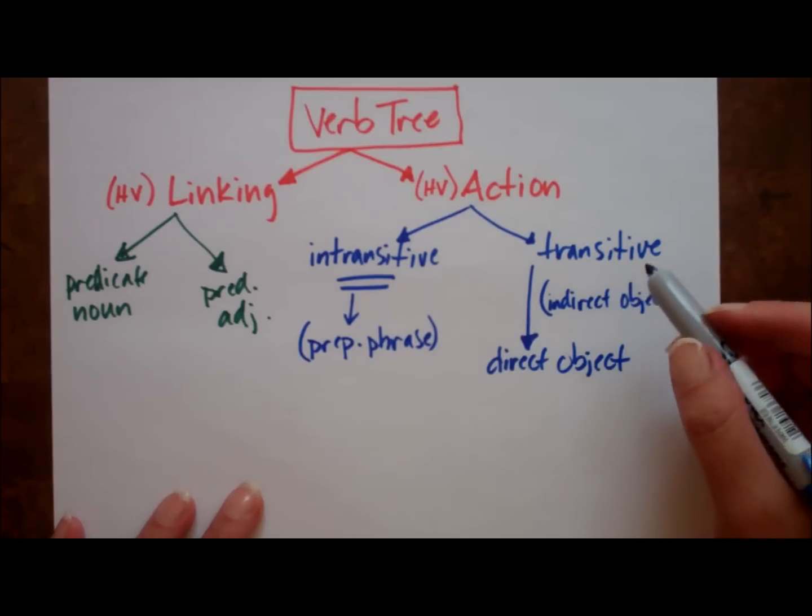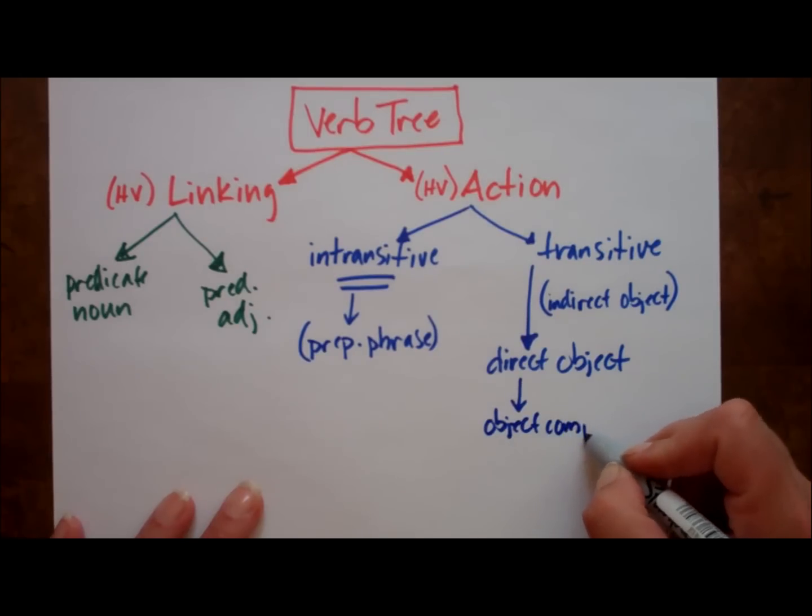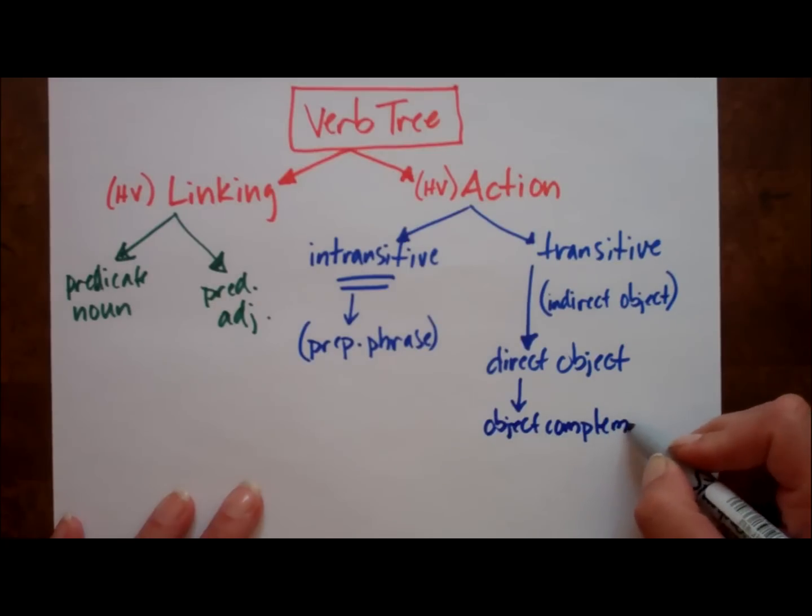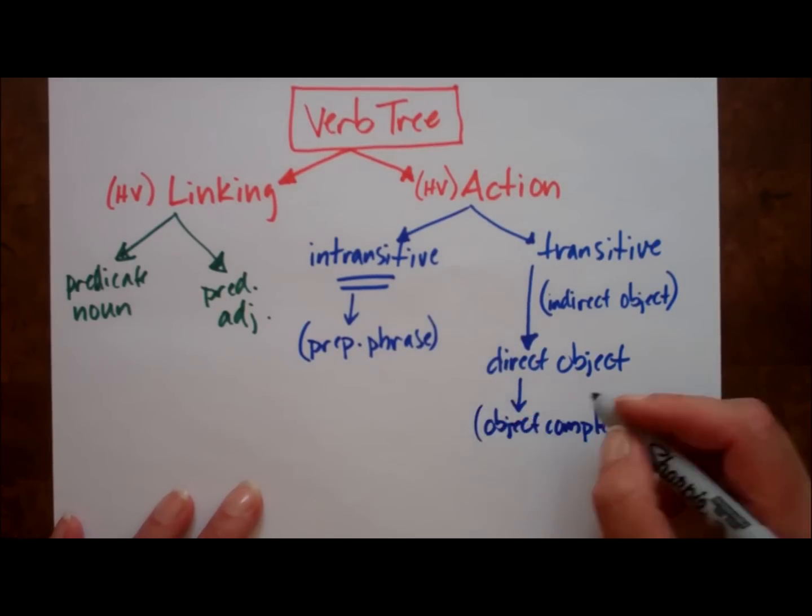Sometimes the direct object will have what's called an object complement. And again, this is not a necessary component. Sometimes they're there, sometimes they're not. So we'll put that in parentheses.